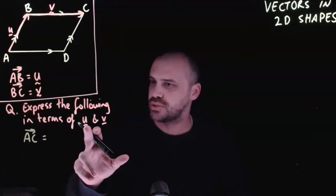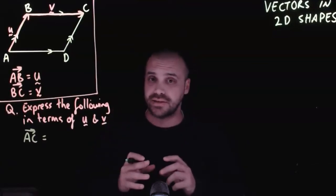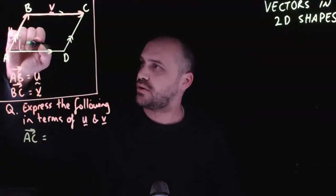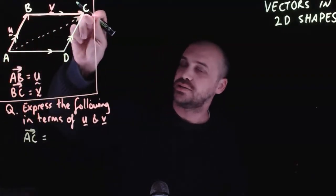Our first one here, vector AC. Now, what does vector AC look like? It's the arrow from there to there, from A to C.